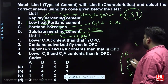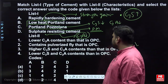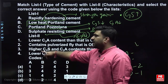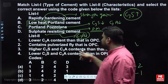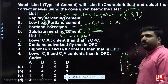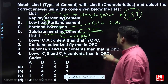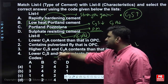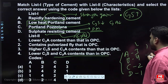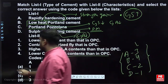For A, which is rapidly hardening cement, we need C3S to be more. You can see here that higher C3S and C3A content should be more than OPC. So A matches to 3. For B, which is low heat cement, lower C3S and C3A content is required. So B matches to 4. The correct answer is 3, 4, 2, 1 — option B is the correct answer.